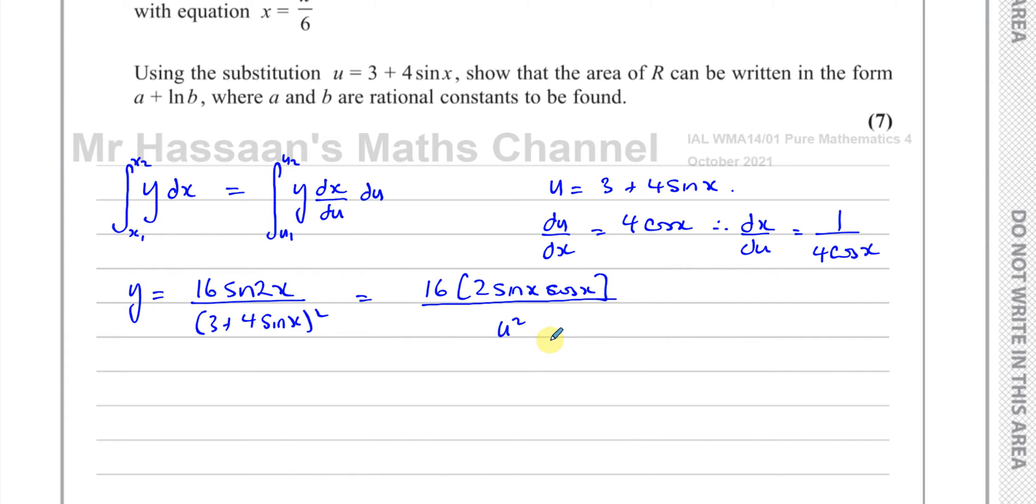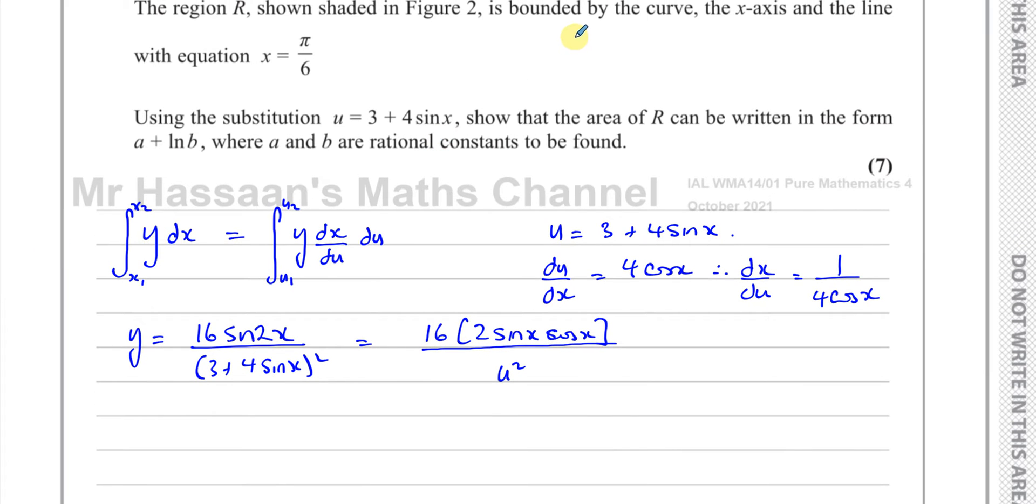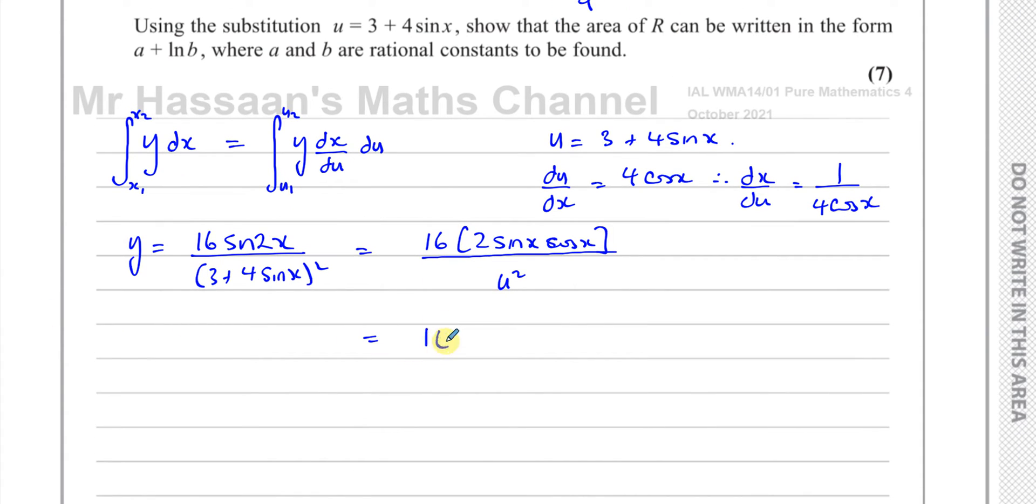And if I rearrange this formula, if I have u = 3 + 4sinx, I can replace the sinx here. If I rearrange this, (u - 3)/4 = sinx. So I can replace the sinx here. So let me do this step by step. That's 16 times, I'm going to have, well, I can actually make it 32 times just to make things clearer.